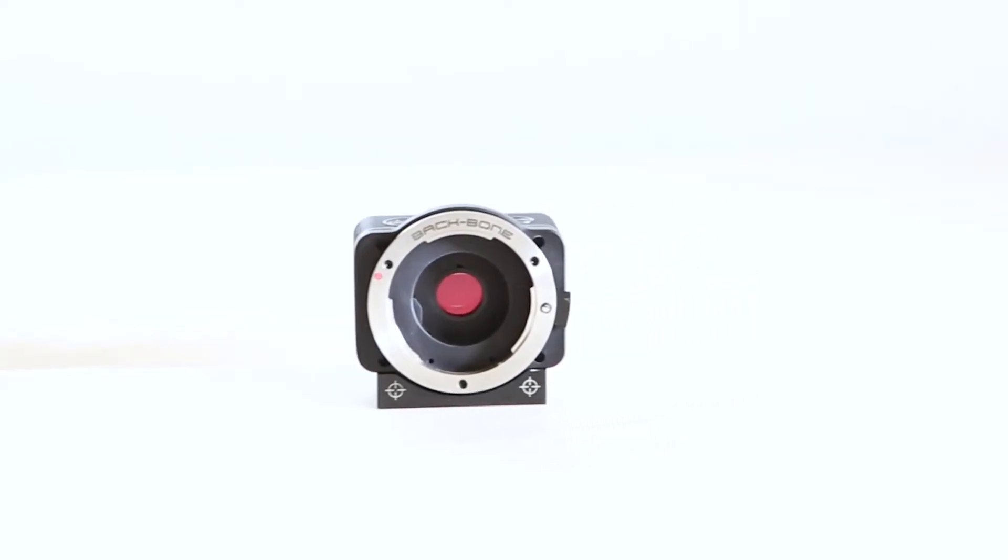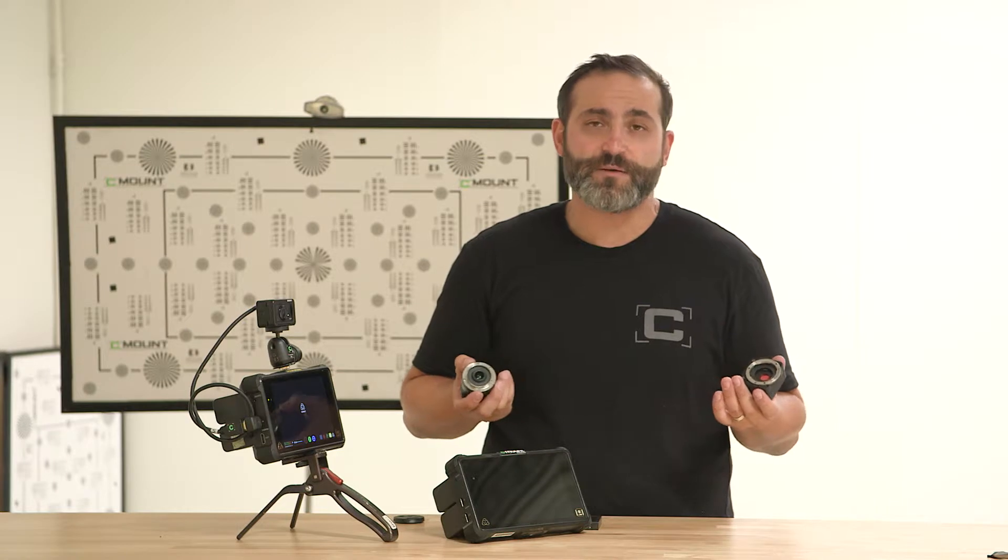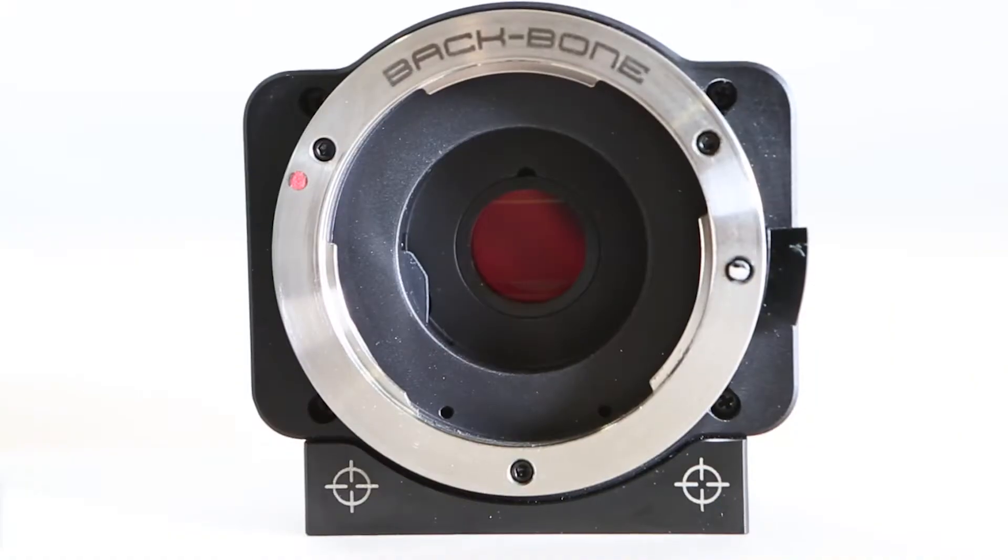Another cool function of the modified version is you can actually remove this IR cut filter and shoot some infrared-looking video, which is always difficult to come by in 4K high-quality night-vision type footage. So this is a really good camera to do that with.